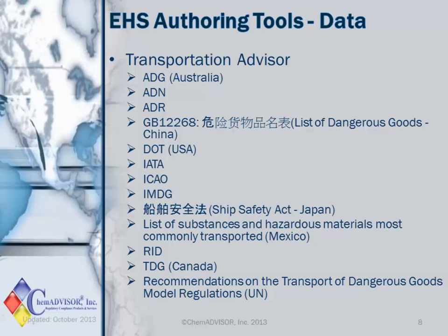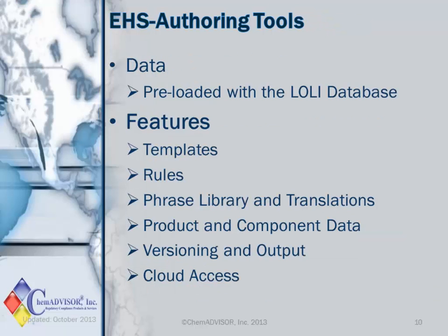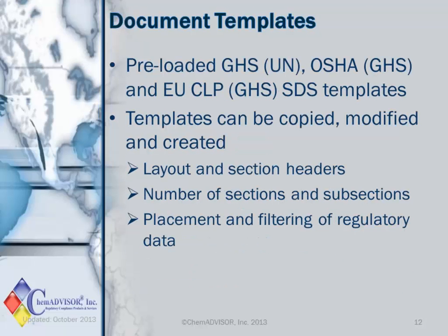In addition to the regulatory data found in Lawly, EHSAT also supports the use of ChemAdvisor's Transportation Advisor database, providing you with proper shipping names, packing groups, and other information from these many sources. Let's move on to some of the features of the EHSAT system and begin with templates. Templates cover the way a document looks, defining the layout and the sections, but also how and what regulatory data appears on the document. For example, you may have U.S. data available for a substance.